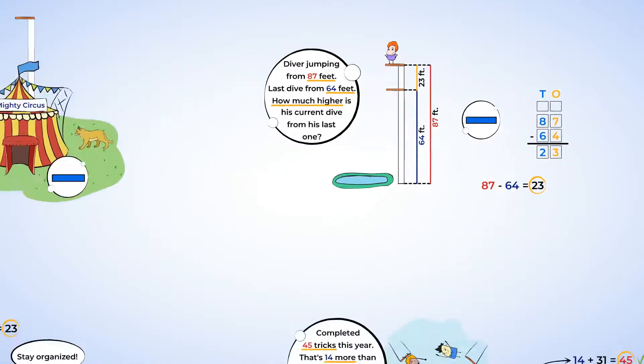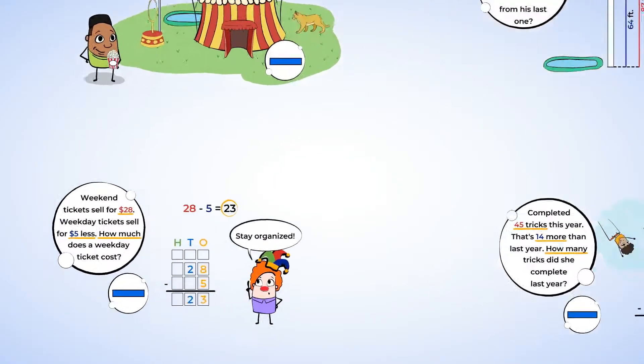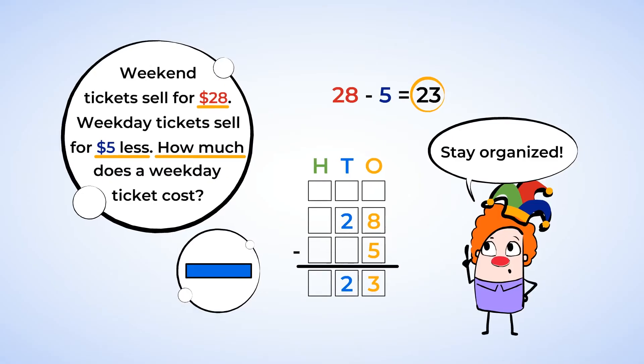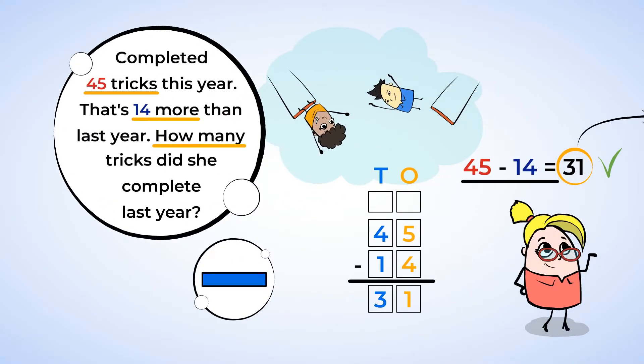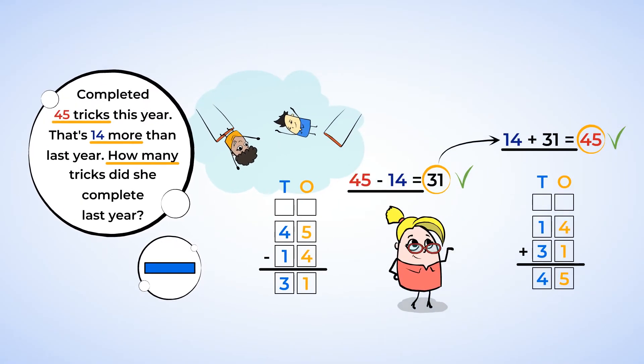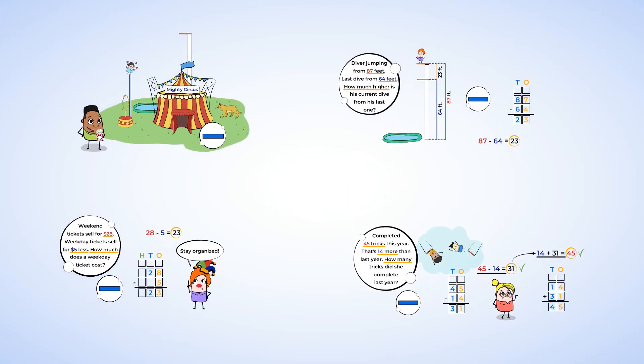Great work today. You subtracted two-digit numbers using place value. You carefully lined up your numbers, so that the numbers in each place value spot were in the same column. You first subtracted the ones, and then the tens. Finally, you learned that you can double check your answer using addition. I'm going to go watch this dive. You have a mighty great day.